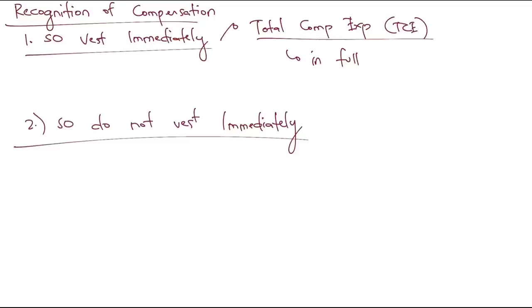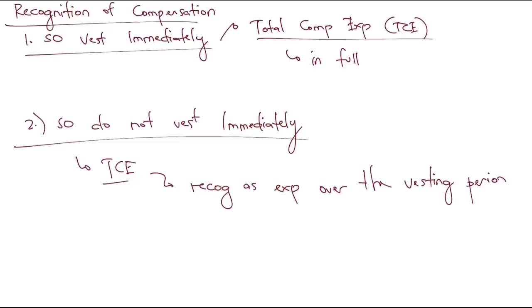If the share options do not vest immediately, employees need to complete a specified service period — the vesting period. For example, an employee must stay with the company for three years. In that case, the total compensation expense will be recognized as expense over the vesting period, allocated across that period.